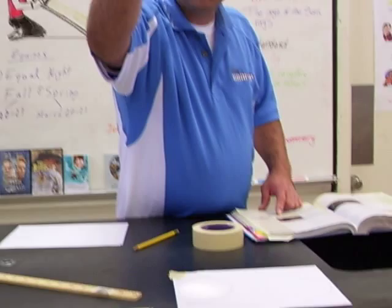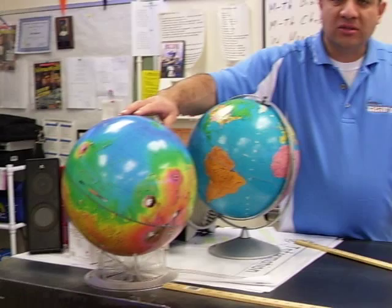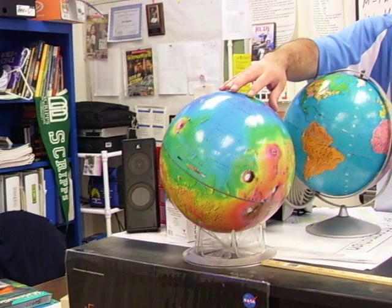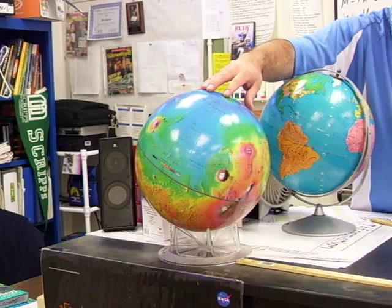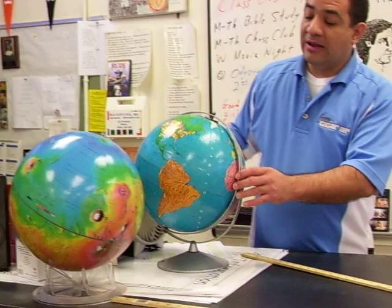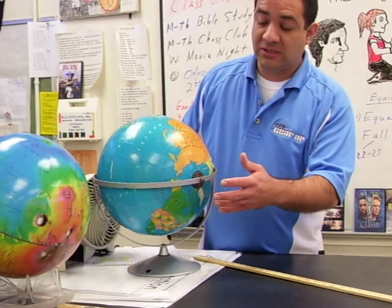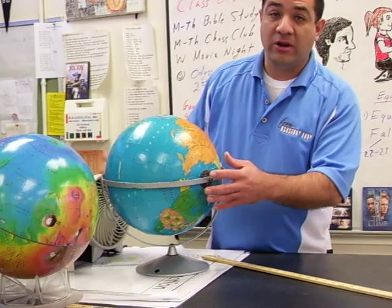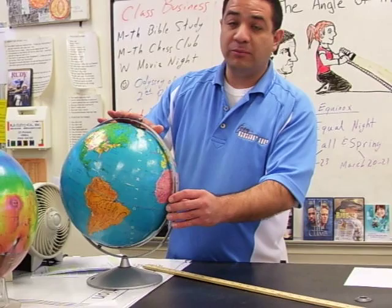Other planets like Mars are also tilted at about 25 degrees, and it does experience seasons just like Earth. However, something like Venus and Jupiter only have a 3 degree angle, so their seasons are much smaller. Something like Uranus, which is tilted at a 90 degree angle, experiences extreme summers and winters. So the reason we have summer and seasons is because the planets are tilted. This is Mr. Aguirre, signing off.